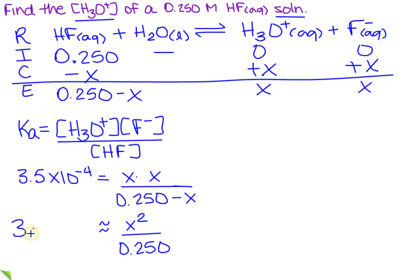So I still have the 3.5 on this side. So then I'm going to come up here, and I'm going to cross-multiply and set equal. So I get 3.5 times 10 to the minus 4th times 0.250, and that's going to be approximately equal to X squared.